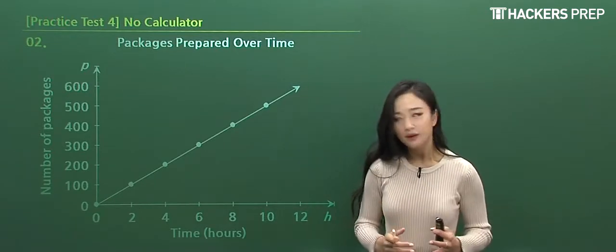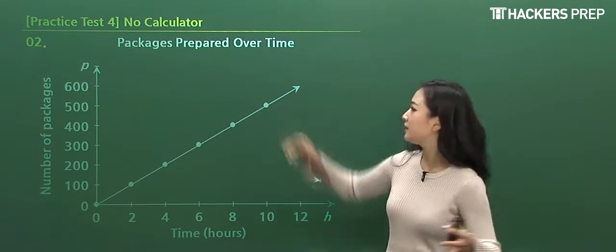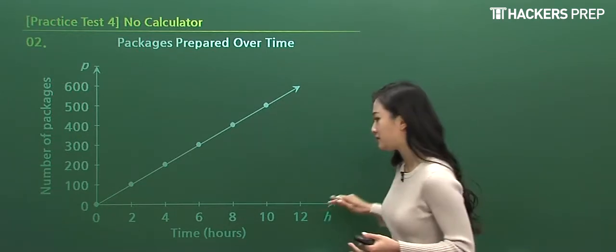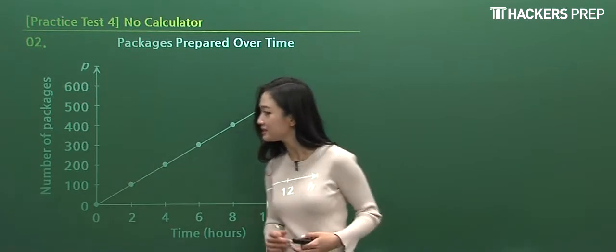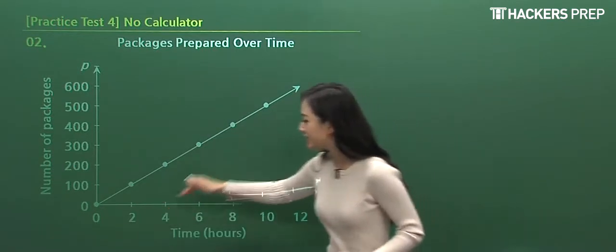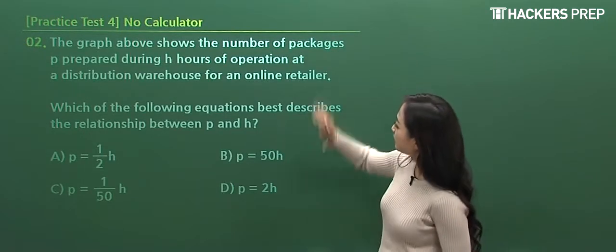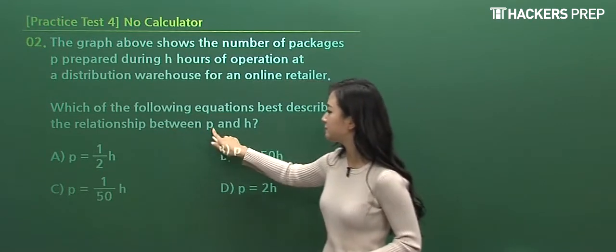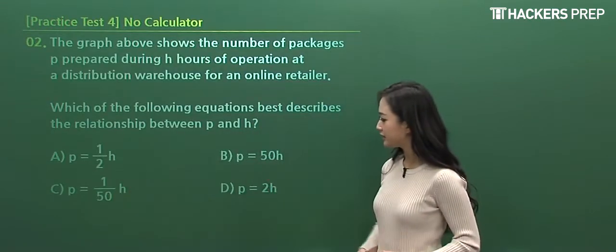Number two, they're presenting a graph, and when we first encounter graphs, you must always read the title and the respective axes. So they're presenting data regarding packages prepared over time, so we can anticipate that the x-axis would be time, and the units given are in terms of hours, and y-axis is number of packages, and we can see that there's an overall positive linear trend. As time progresses, the number of packages sold will also increase. And what are they asking for?